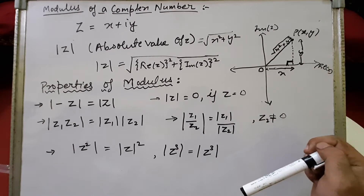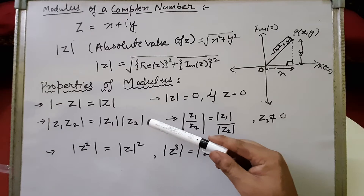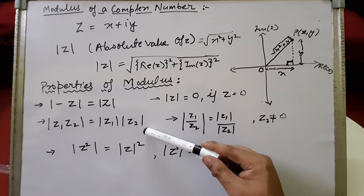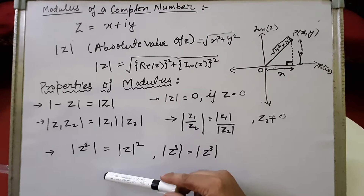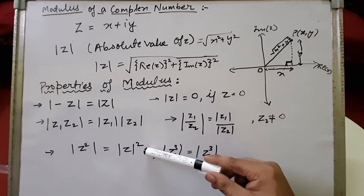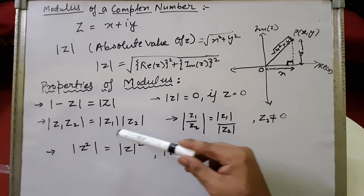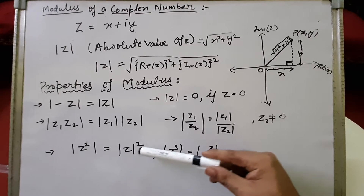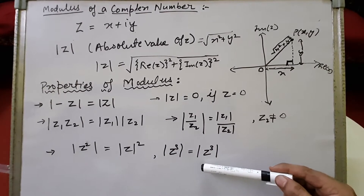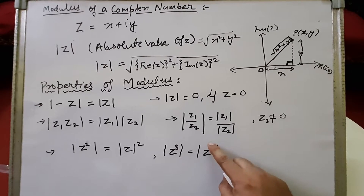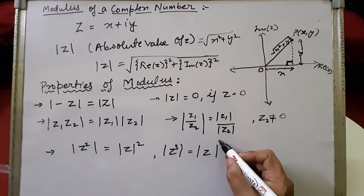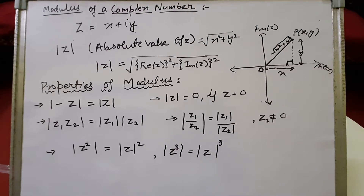If we apply the product property with z1 and z2 both equal to the same complex number z, we get mod of z squared equals mod of z to the whole square. Similarly, mod of z cubed equals mod of z to the whole cube. Please note down these properties.